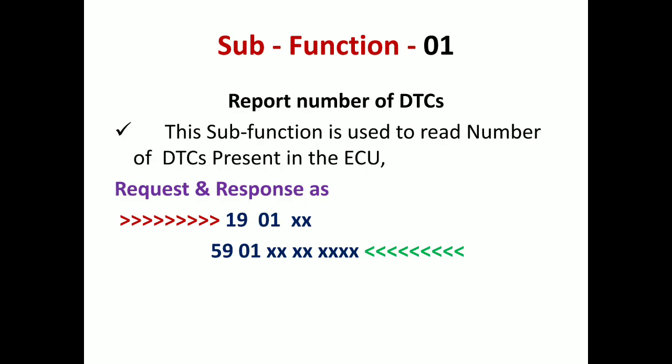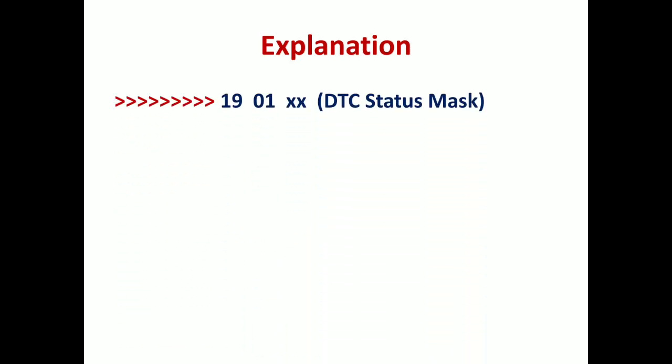Sub-function 01 is Report Number of DTCs. This literally means: how many faults are present in the ECU? For example, if you have four faults in the ECU, the expected response will be 04. The request frame is 19 01 xx, where xx is the DTC status mask — the mask you send to the ECU requesting information about DTCs matching that mask.